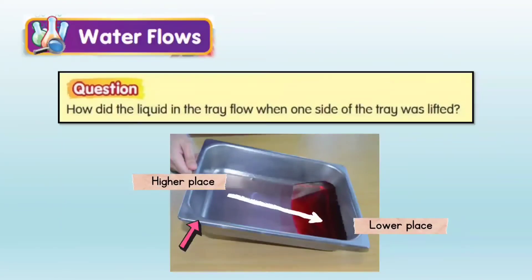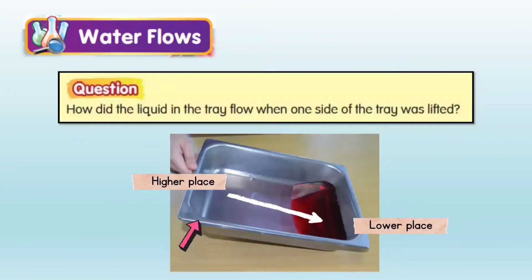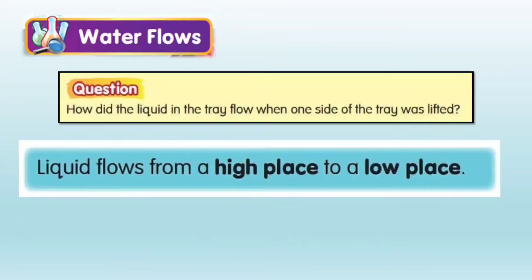How did the liquid in the tray flow when one side of the tray was lifted? One side of the tray that was lifted has become a higher place. This forced the water to flow from the higher place to a lower place, because liquid flows from a higher place to a lower place.